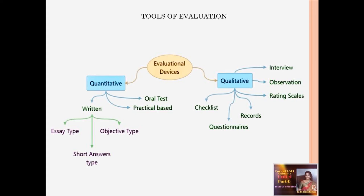Here you can see in this chart, the evaluation tools are of two types: quantitative tools and qualitative tools. The quantitative tools are the ones which can be measured, like tests — achievement tests, diagnostic tests. They can be written tests with different question types like essay type, objective type, or short answer type. You can also have oral tests and practical tests. In the qualitative type, you can see the ones which describe or observe behavior — observation, rating scales, records, questionnaires, checklists, and interviews — all giving you behavioral patterns which are observed carefully and systematically.